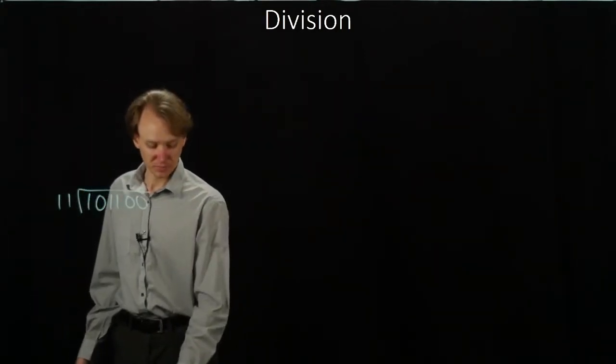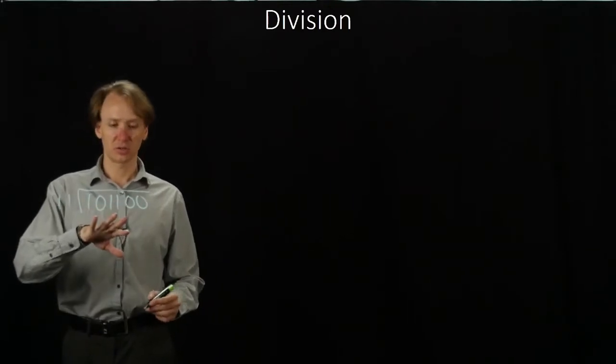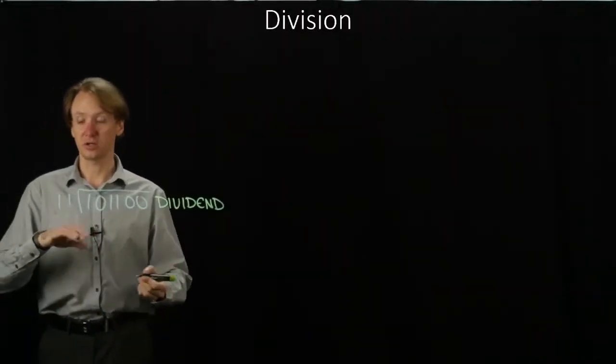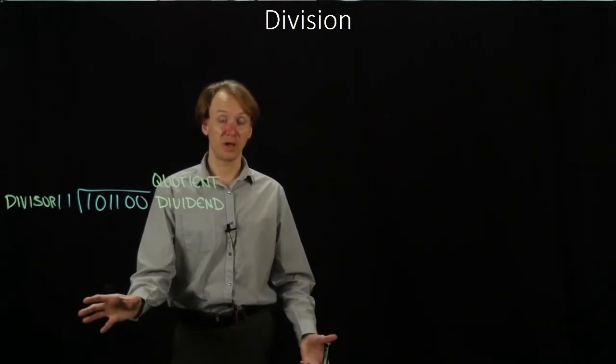We'll start with an example of two numbers. I'll divide this number by 3 in binary. I'll add some terminology so we can talk about the various parts of our algorithm. This number is our dividend. We divide it by the divisor. The result we get is called the quotient, and at the bottom at the end we'll have our remainder.